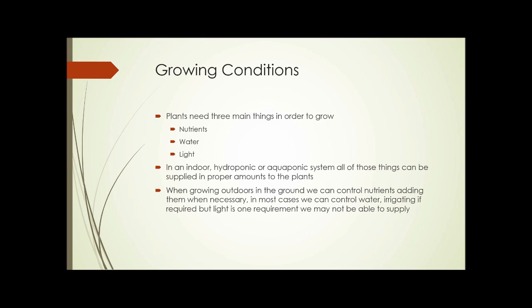Unit 8, Part 2: Growing Conditions. The first part of this unit dealt with land availability and some possible issues with land availability in urban areas. Now we're going to deal with growing conditions. Plants need three main things in order to grow: nutrients, water, and light. In an indoor hydroponic or aquaponic system, all of these can be supplied in the proper amounts, depending on the expense one is willing to go through. When growing outdoors in the ground, we can control nutrients by adding them when necessary, and in most cases we can control water by irrigating if required, but light is one requirement we might not be able to supply.